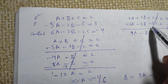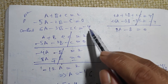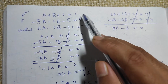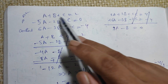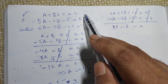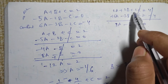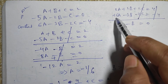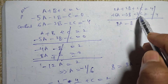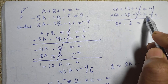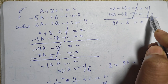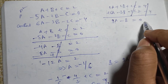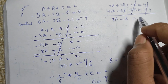Now solving the first and third equations. Multiplying the first equation throughout by 2 gives 2A + 2B + 2C = 4. Adding this to the third equation 6A - 3B - 2C = -4, we are left with 8A - B = 0.